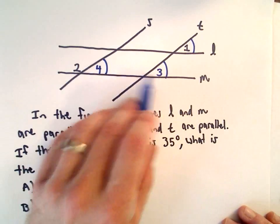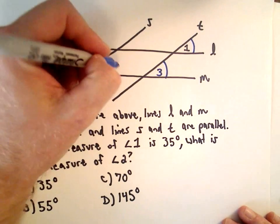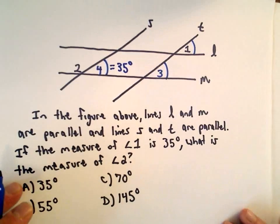All of these angles have the exact same measure, okay. So angle 4 is also going to have a measure of 35 degrees.